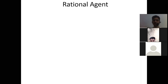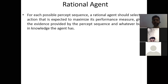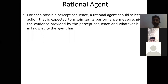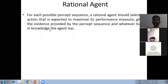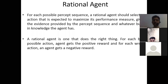For each possible percept sequence, a rational agent should select an action that is expected to maximize its performance measure, given the evidence provided by the percept sequence and the built-in knowledge the agent has. This rational agent will maximize performance based upon its percept sequence and previously possessed knowledge. A rational agent is one that does the right thing — meaning it looks for the optimal solution in any given situation.